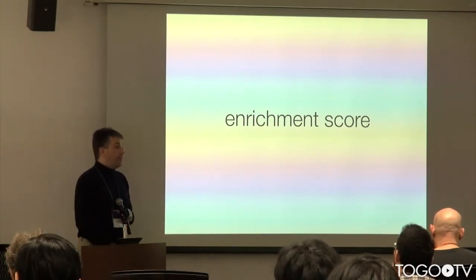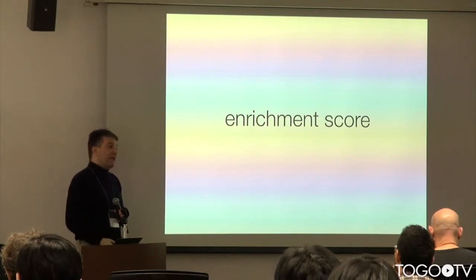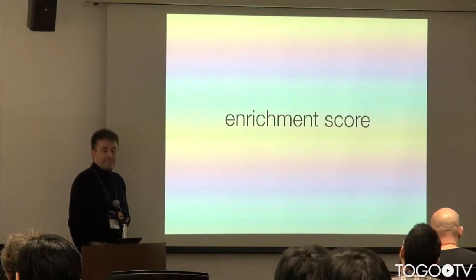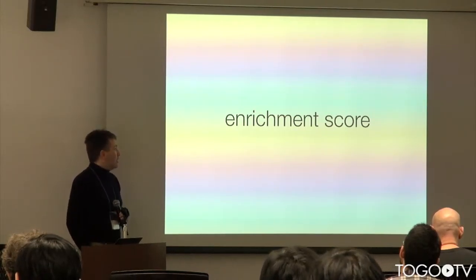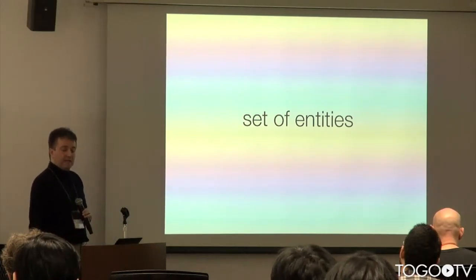You can combine that into some sort of enrichment score, where you calculate, for example for every single human protein, how much more is that mentioned in the abstracts that match my PubMed query compared to other abstracts in PubMed. Then you can put some cutoff on that score, and you basically reduce your problem to having a set of entities.